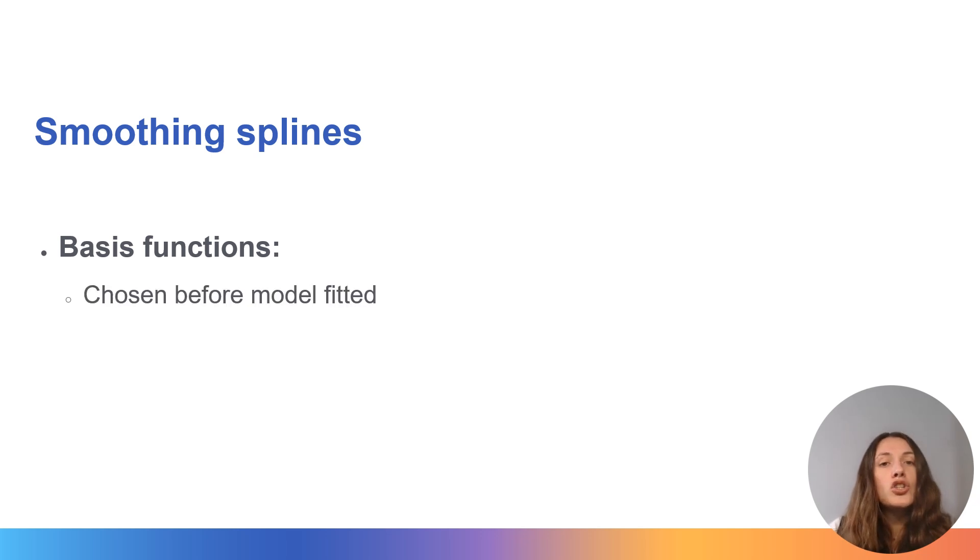Basis functions are chosen before the model is fitted based on the type of smoothing spline we want to use. Each smoothing spline has a different basis function. So our choice of smoothing spline depends on the expected complexity and nature of the relationship we're trying to capture and whether our smooth function is across a single variable or whether we want to generate this across multiple dimensions.